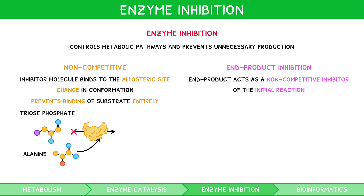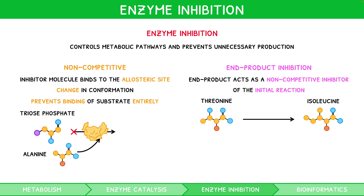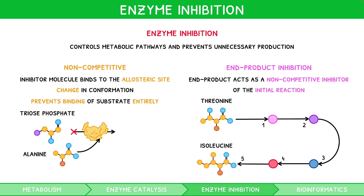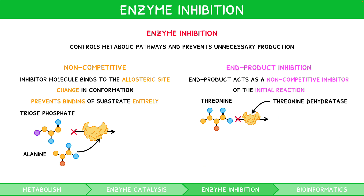For your exam, you need to learn an example: the conversion of threonine to isoleucine. Threonine undergoes a five-stage reaction, each utilizing an intermediary and its own enzyme, threonine dehydratase. The final stage produces isoleucine as a product, which then binds to the allosteric site of threonine dehydratase in reaction 1, thus acting as a non-competitive inhibitor, preventing the conversion of threonine and so shutting down the pathway.